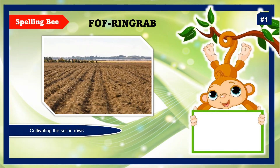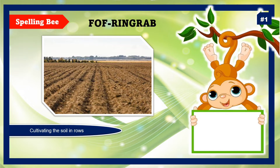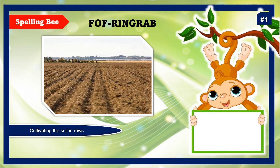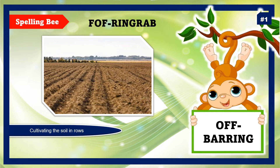Let's begin with item number 1. You have jumbled letters at the top of the picture. Arrange them to get the correct spelling of the word. The clue is: cultivating the soil in rows. The answer is off-bearing.